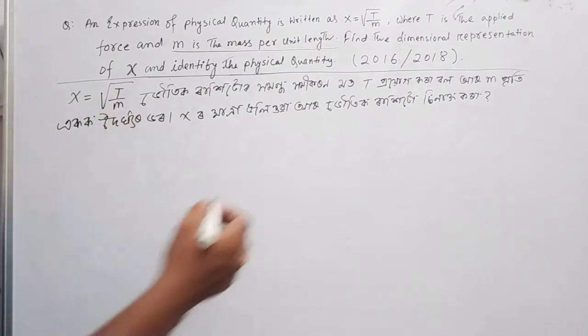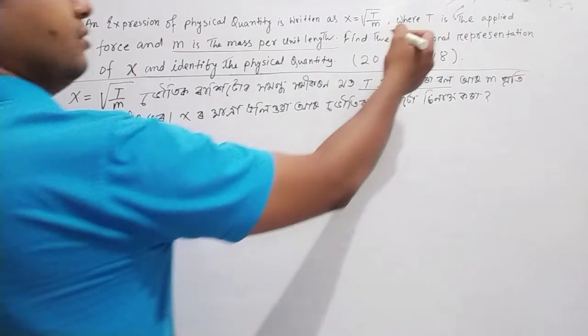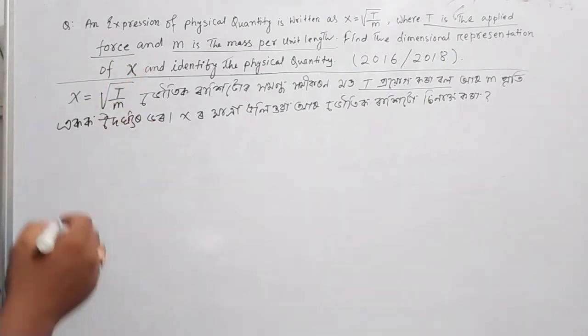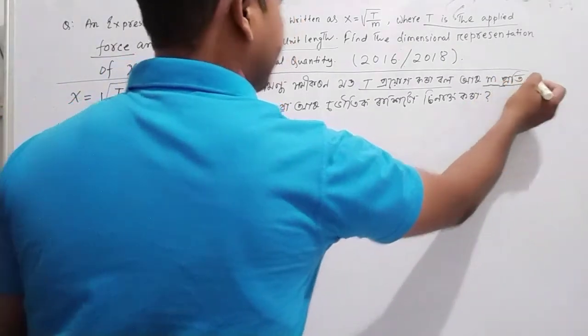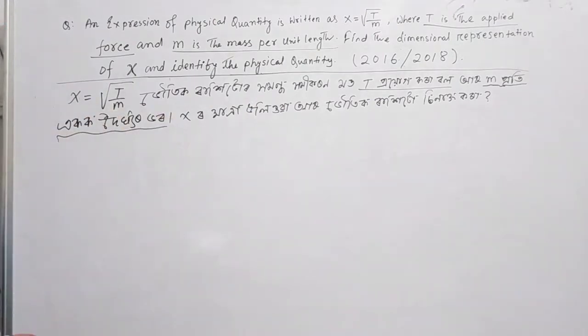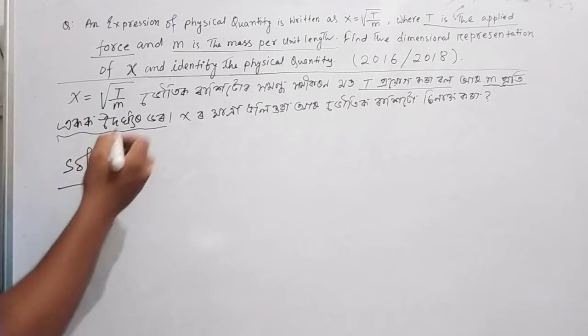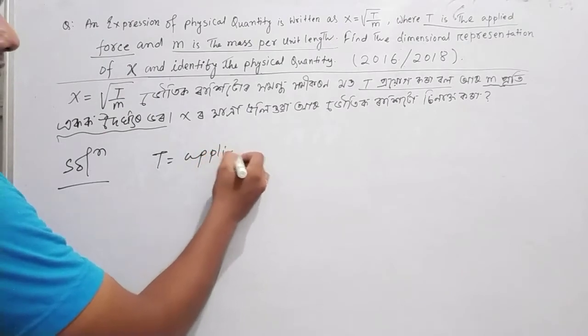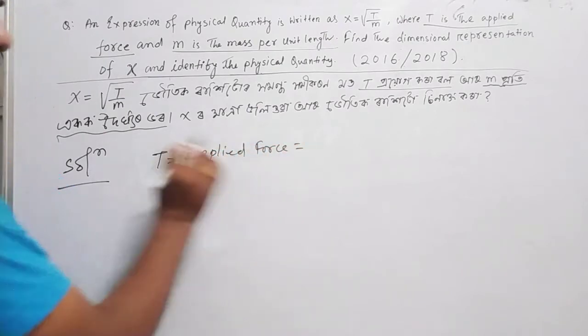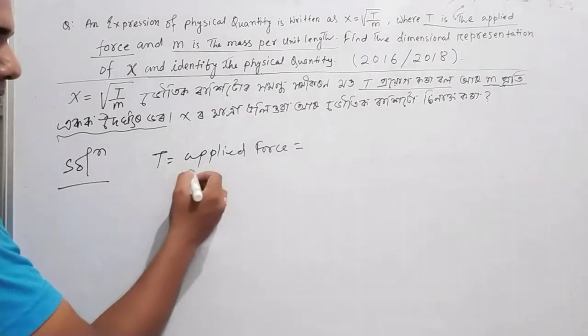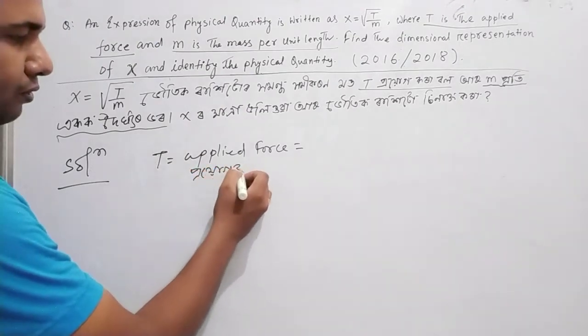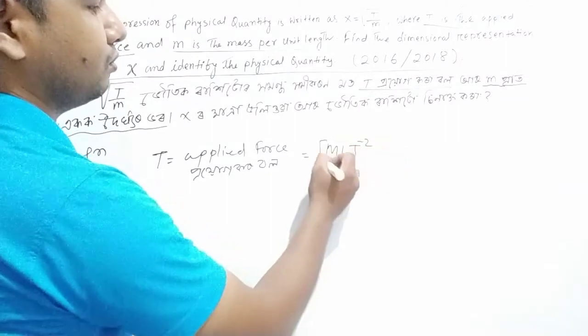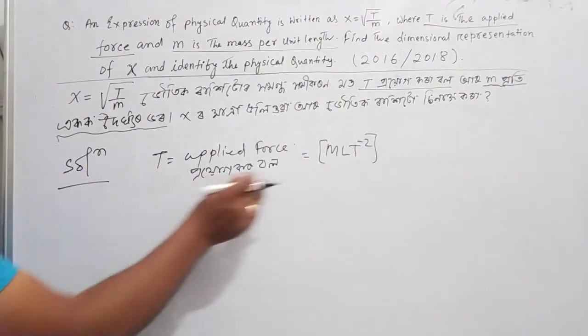T is the applied force, which means T is a force. The dimension is MLT to the power minus 2. You have already learned this.